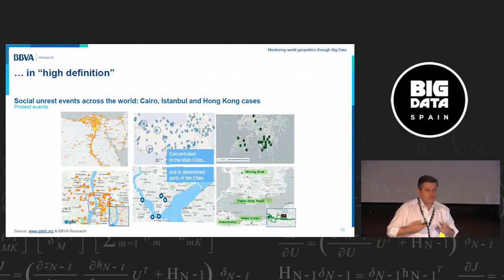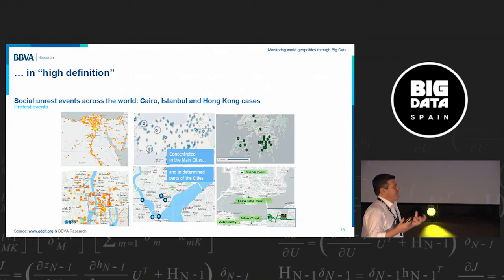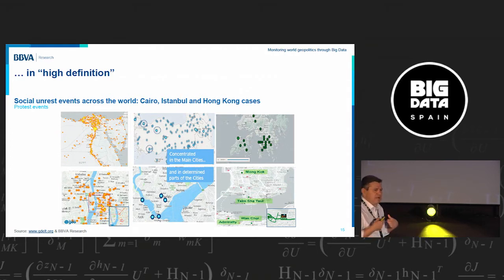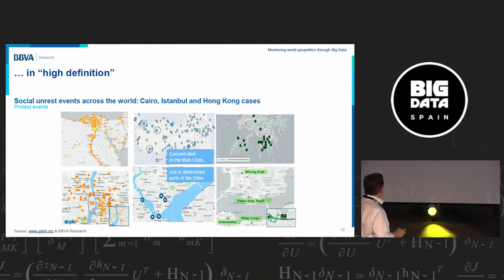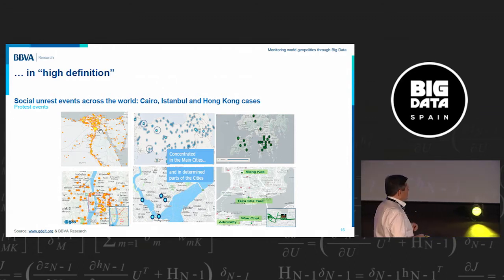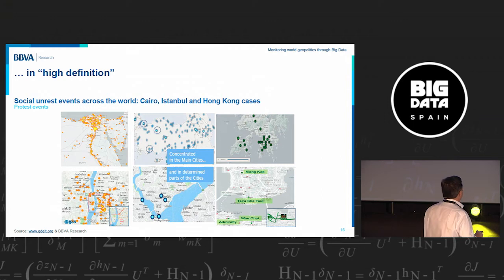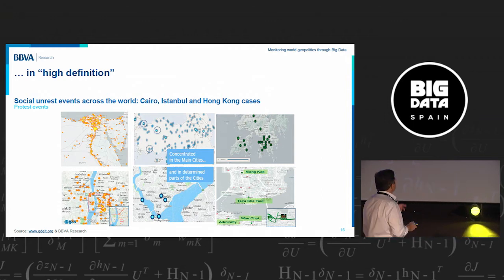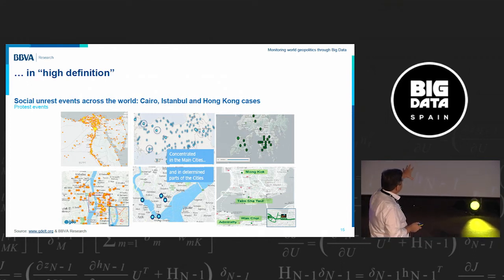Big data allows us to observe things in high definition — in 4K. As economists, we used to talk about countries, but now we can talk about counties, provinces, and go all the way down to cities, individuals, and streets. We can check what is happening in cities everyone knows, like the protests in Cairo — and this is at the street level, where things were really happening. We can check this every 15 minutes. We can also see what happened in Istanbul five years ago, or what happened in Hong Kong.